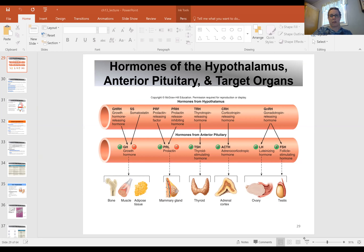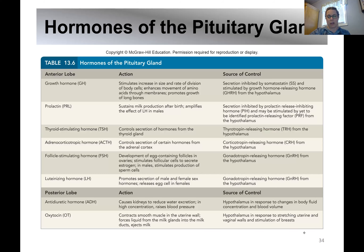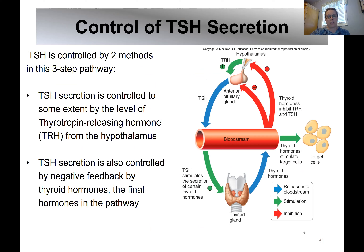I'm going to share my screen. Last time we talked about some basics of the endocrine system. Remember we talked about the difference between the endocrine and exocrine systems — the endocrine system releases hormones into the bloodstream, whereas the exocrine system secretes a product into a tube or duct that delivers products to a specific place. We talked about endocrine glands like the pituitary, the posterior and anterior pituitary, but I wanted to start here on this slide to introduce today's lecture.